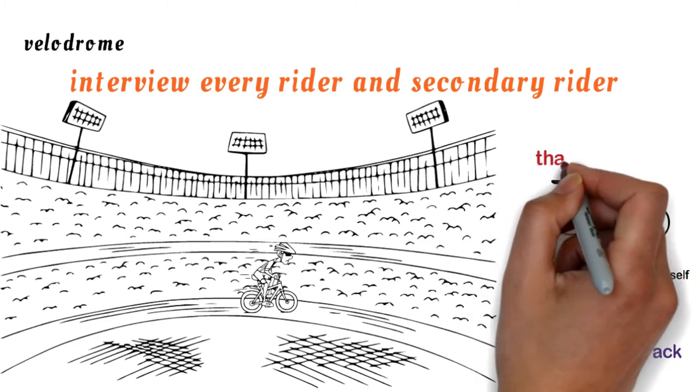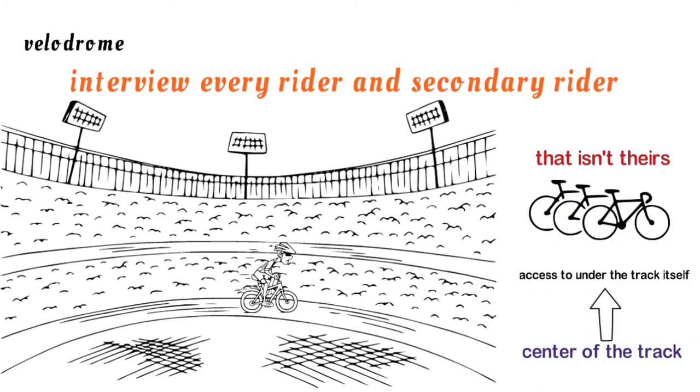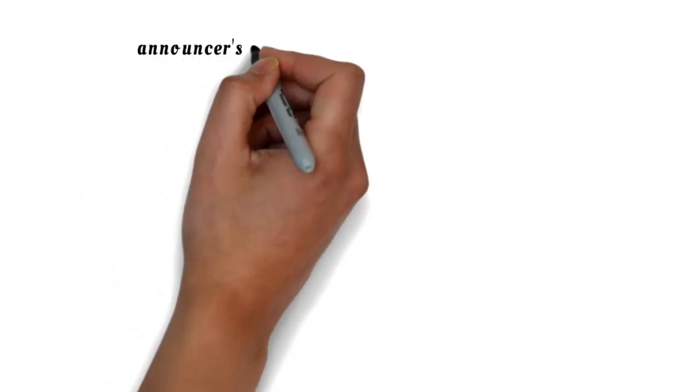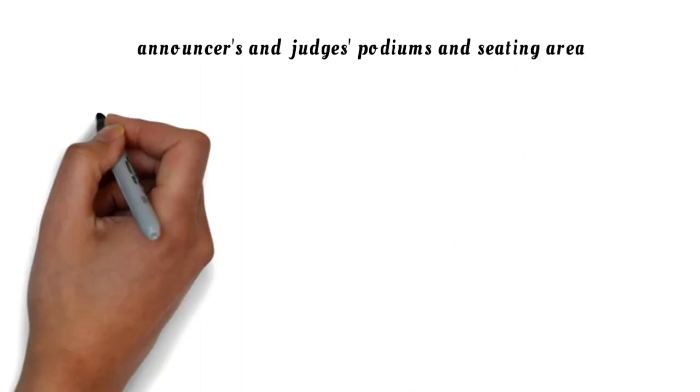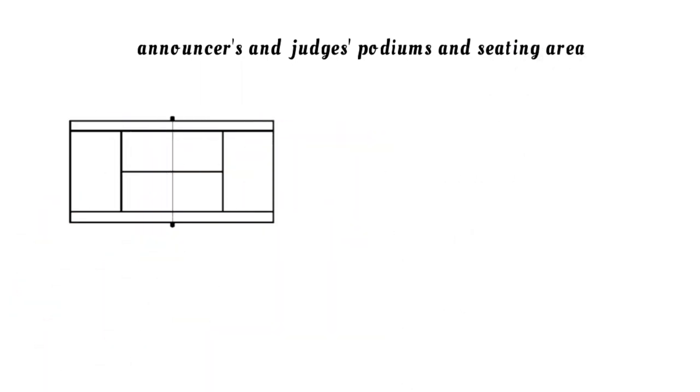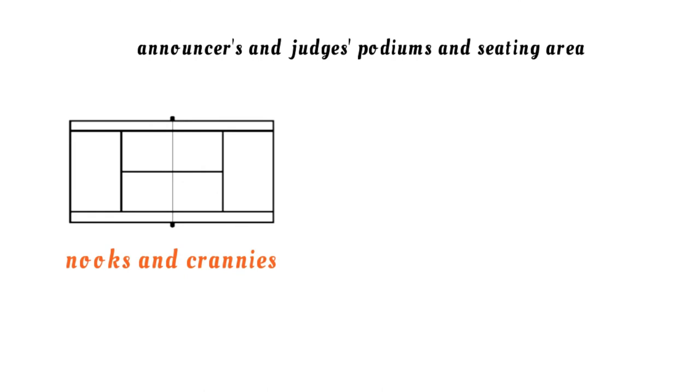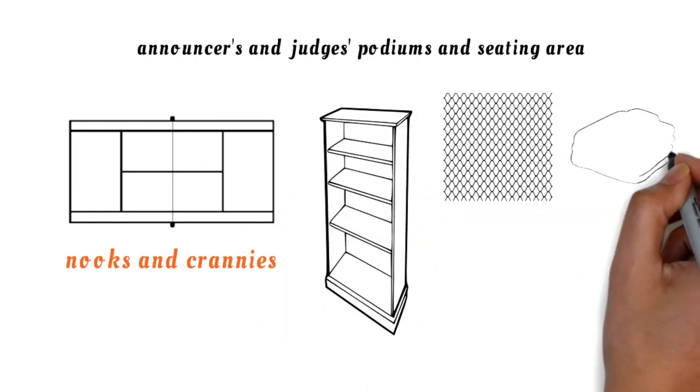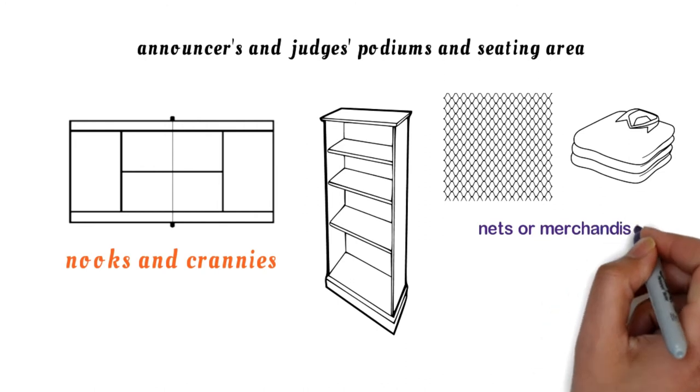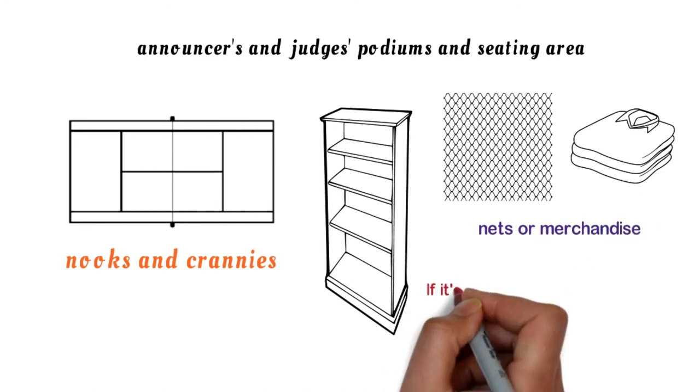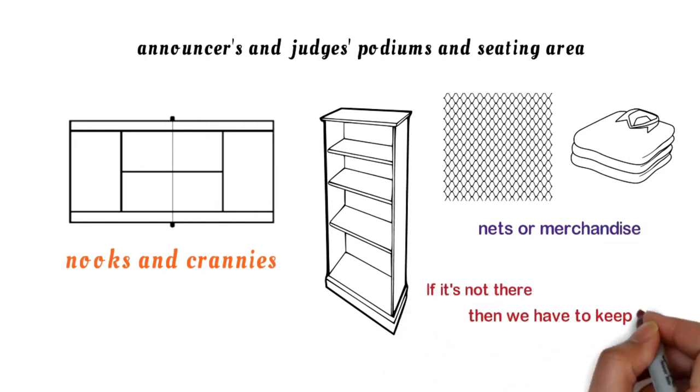I don't suspect anyone of taking something that isn't theirs. It's imperative to check the announcers and judges podiums and seating area by the floor. At the tennis courts, there's plenty of nooks and crannies around a tennis court, and we can't afford to miss a single closet, whether it's nets or merchandise. The missing torch has to be around there somewhere. If it's not there, then we have to keep looking.